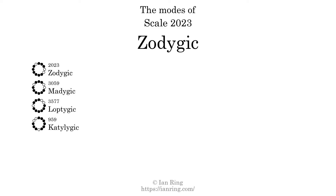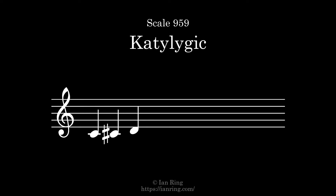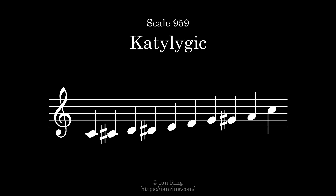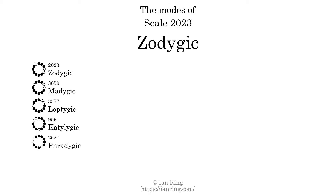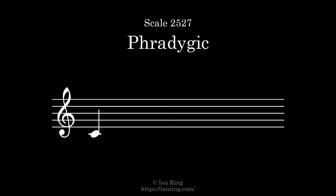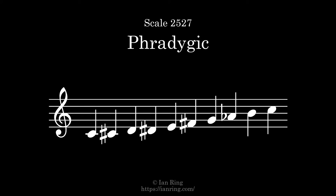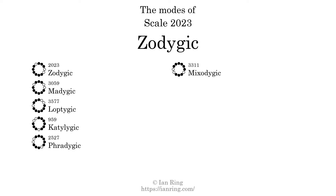The fourth mode is scale 959, also known as Catalogic. It sounds like this. The fifth mode is scale 2527, also known as Freedagic. It sounds like this. The sixth mode is scale 3311, also known as Mixedagic. It sounds like this.